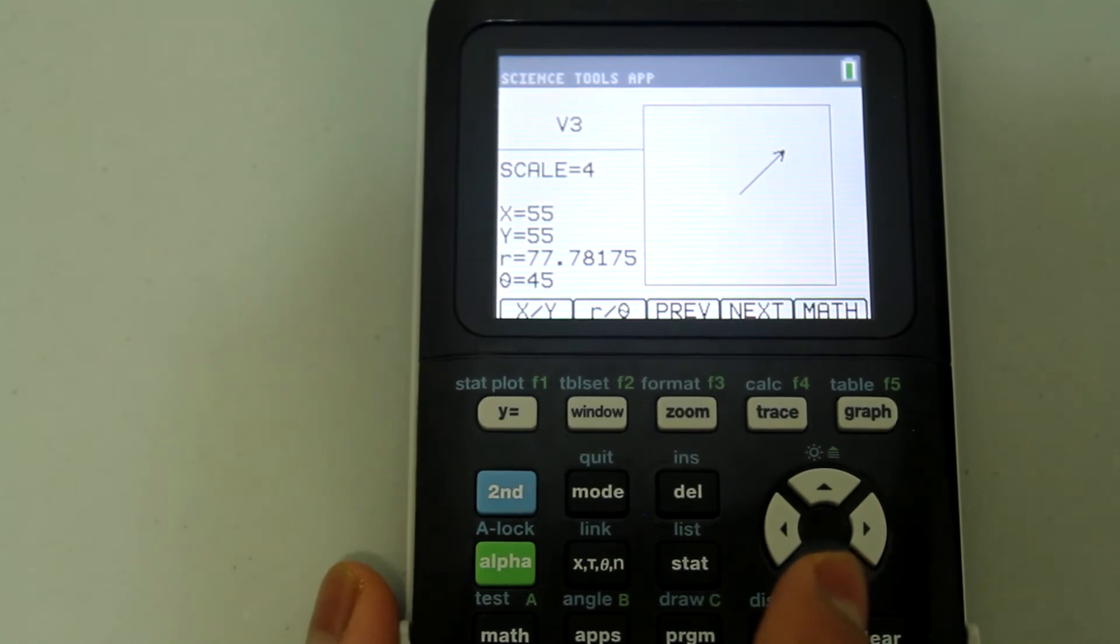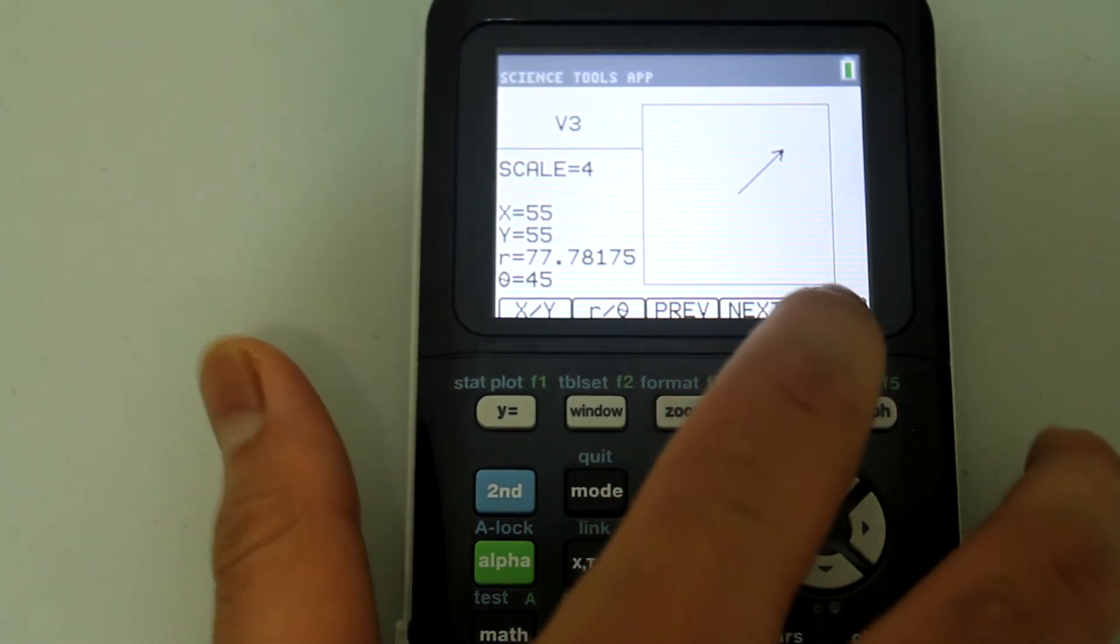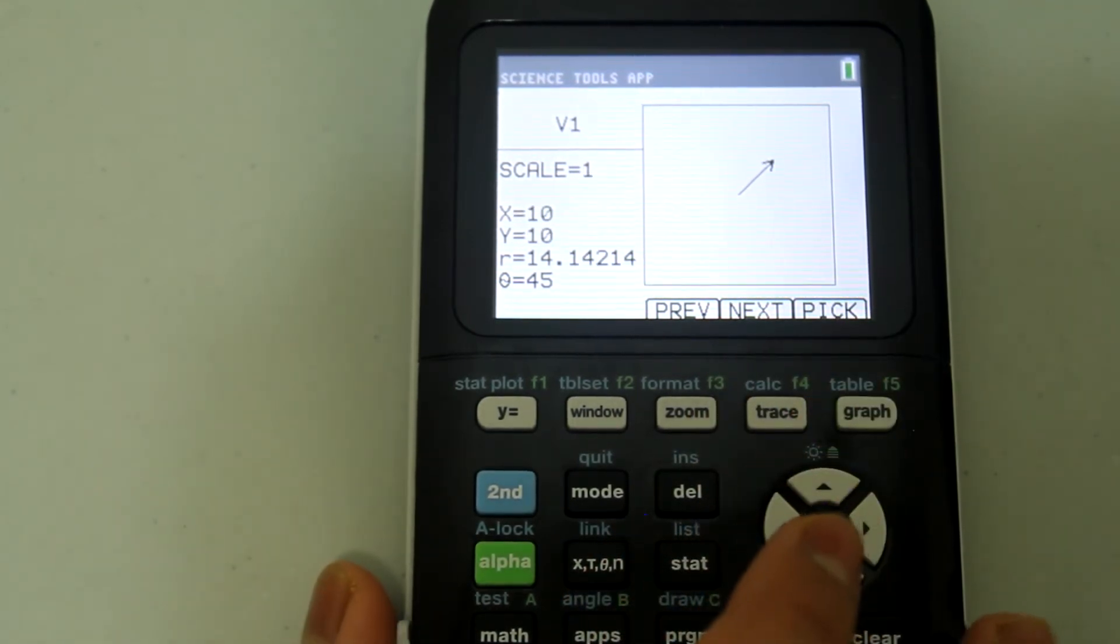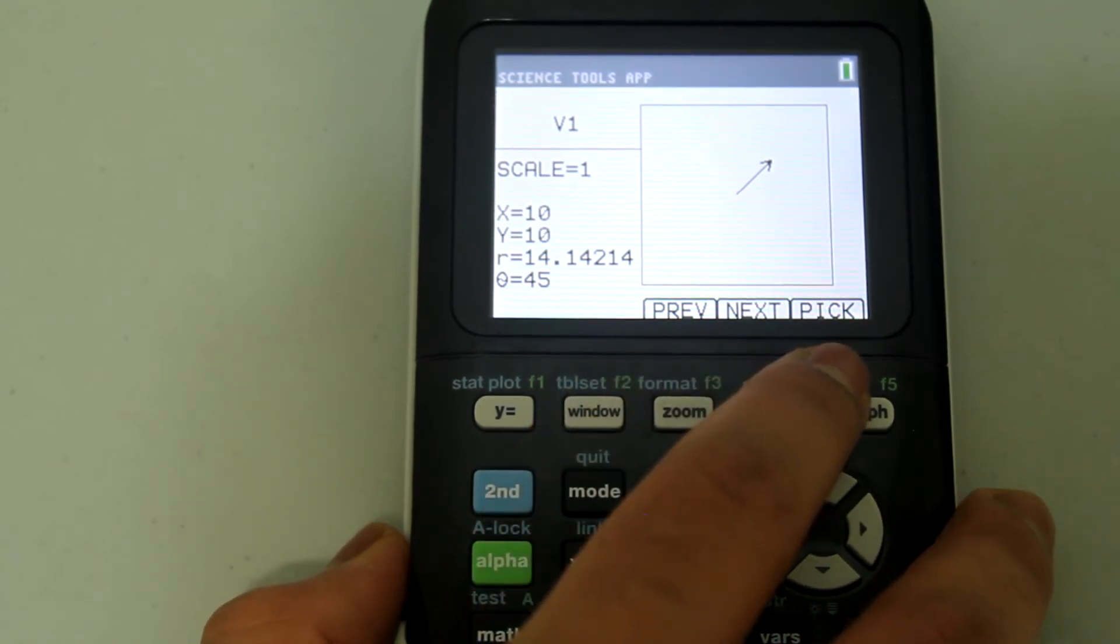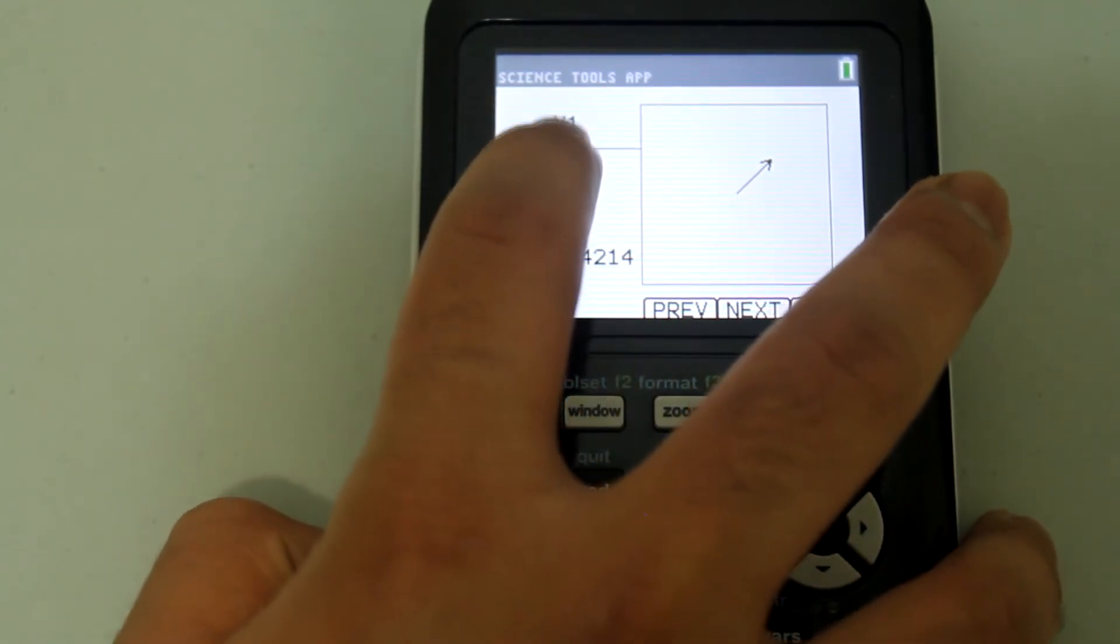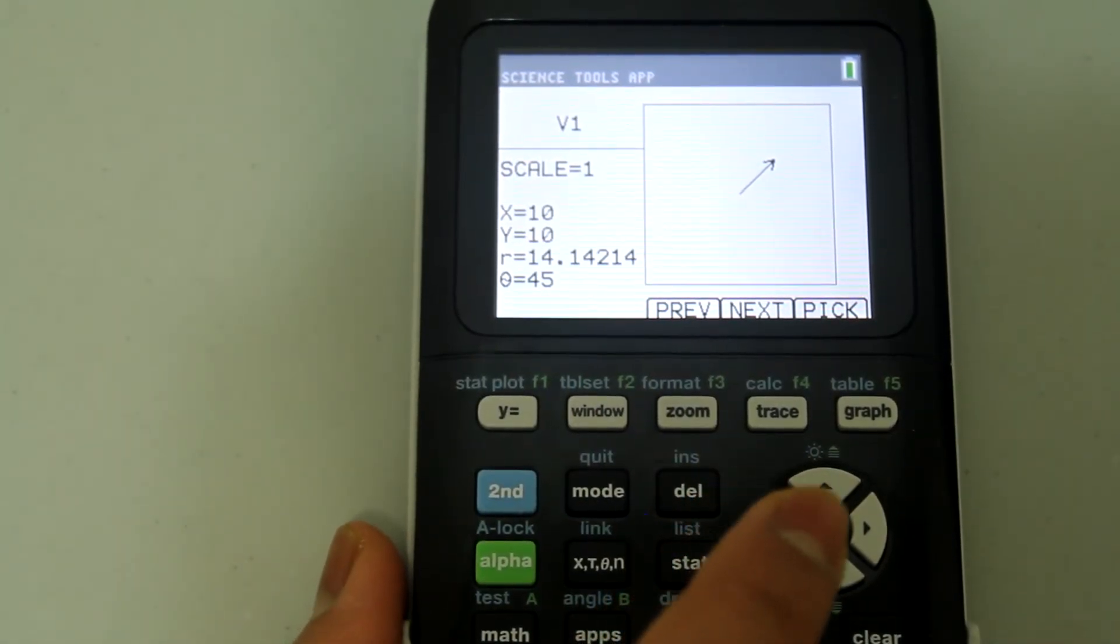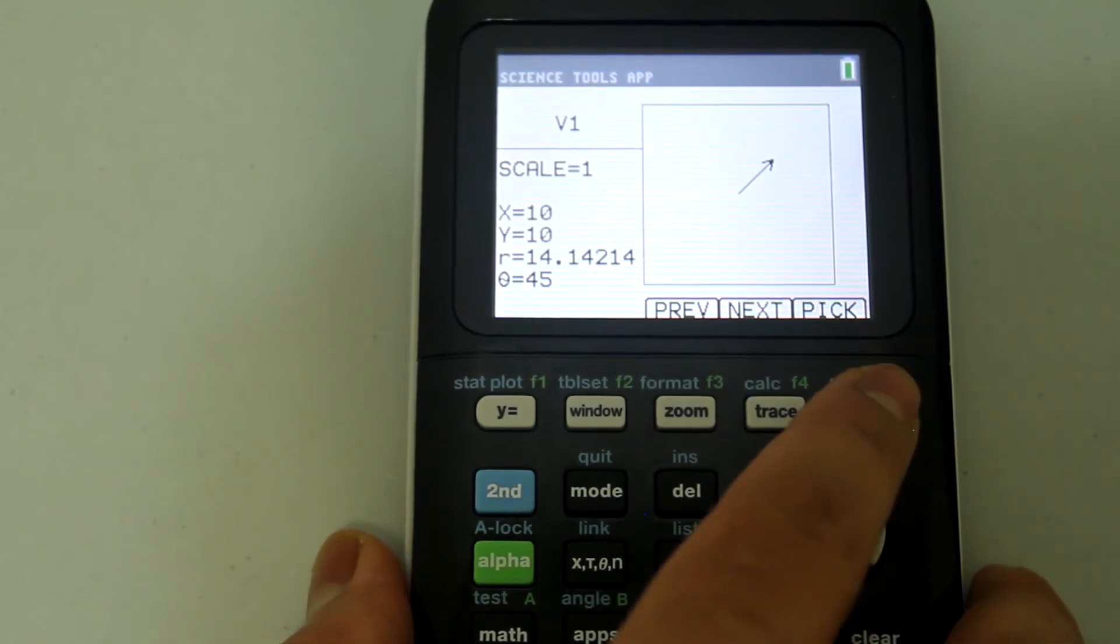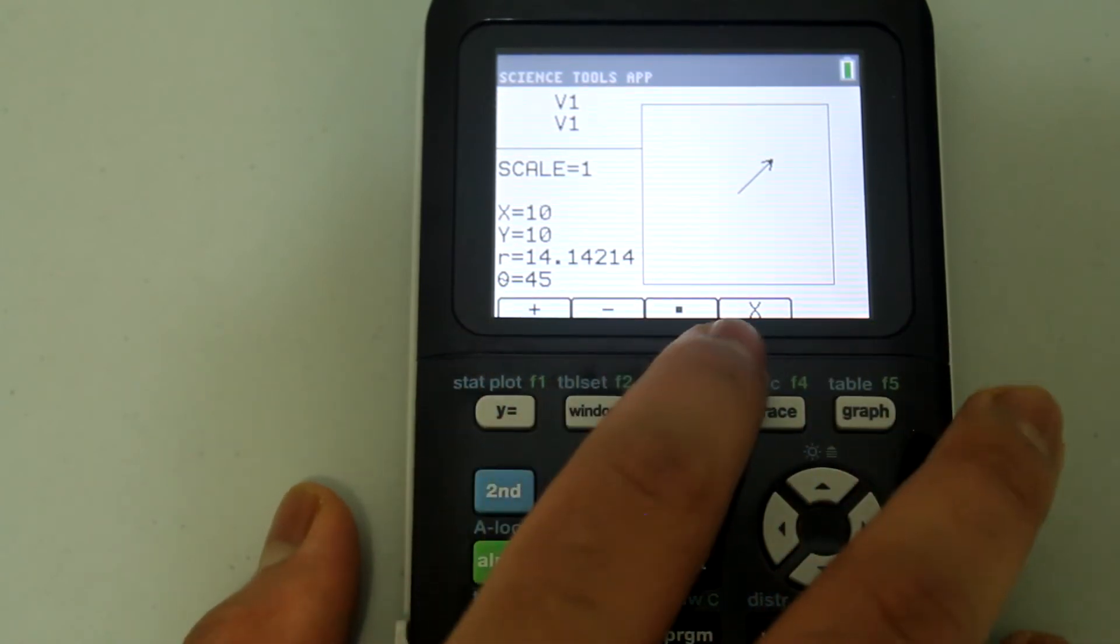Now let's actually do some computations. To do any type of computation hit the button under math, the graph button. Now we have previous, next, and pick. Make sure that the vector shown is the first vector that you are going to use for calculation. Go ahead and go pick using the graph button. Now you see that different operations pop up.